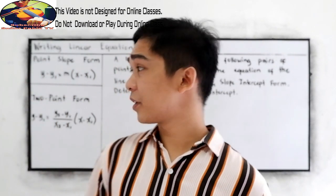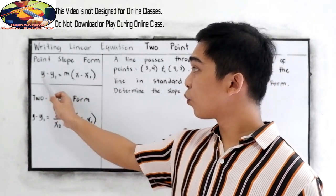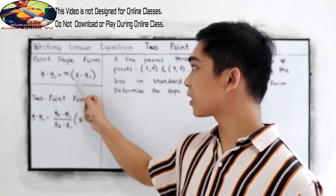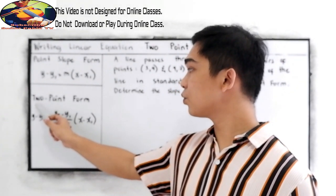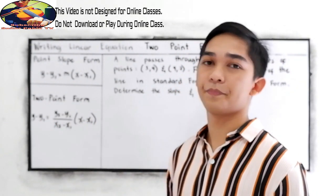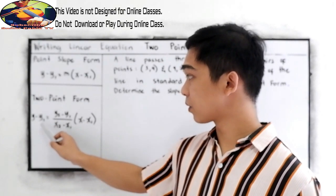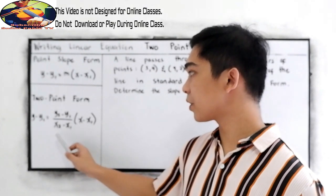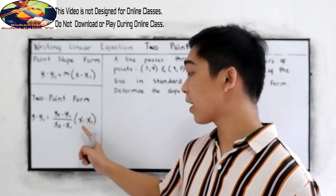After discussing the point slope form, that is in the form y minus y sub 1 is equal to m quantity x minus x sub 1, we have the two-point form: y minus y sub 1 is equal to y sub 2 minus y sub 1 all over x sub 2 minus x sub 1, quantity x minus x sub 1.